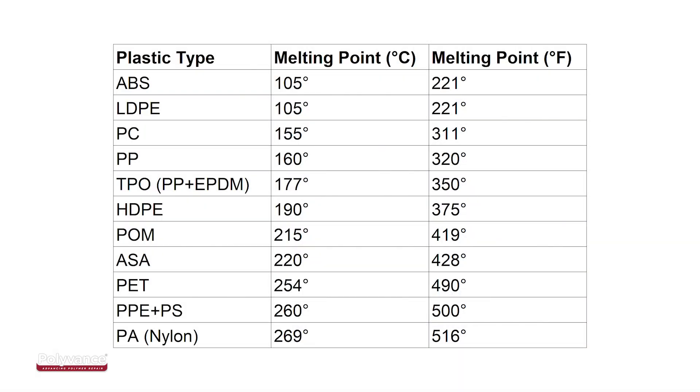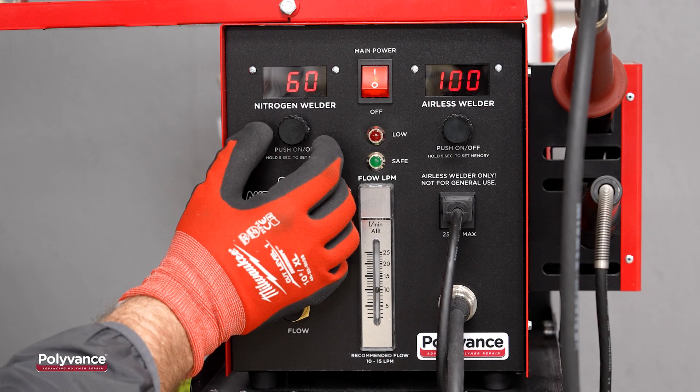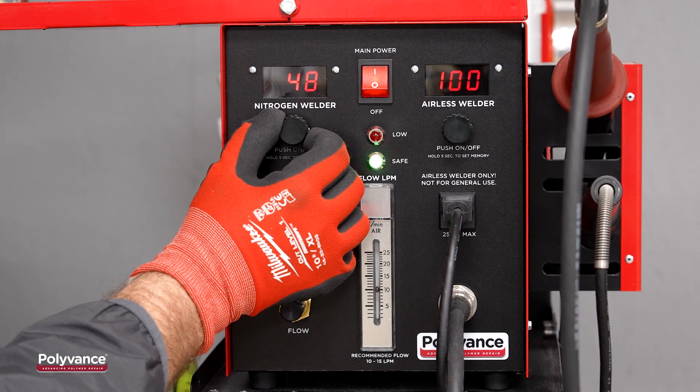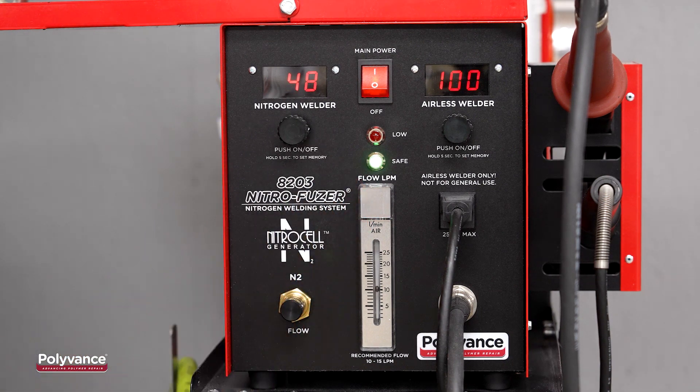Thermoplastics melt at different temperatures, depending on the construction of the molecule chain. ABS and low-density polyethylene melt at relatively low temperatures, while nylon melts at a much higher temperature. It's important to set your plastic welder at the proper setting to melt the type of plastic you're working with.